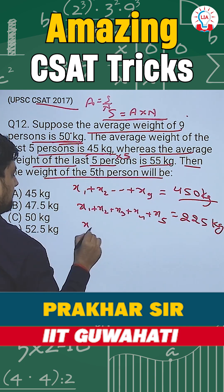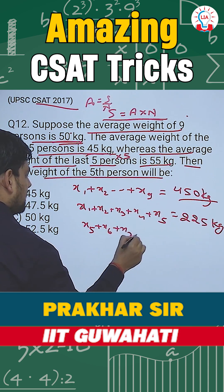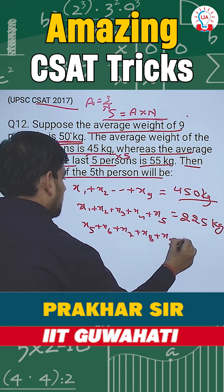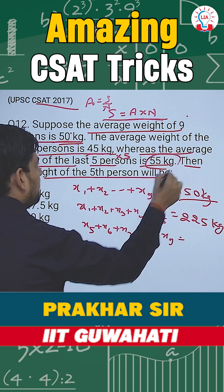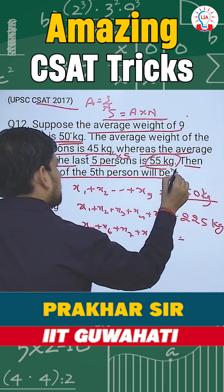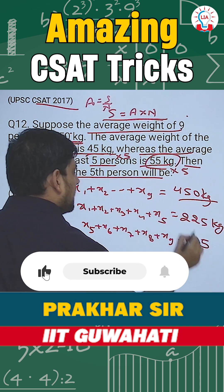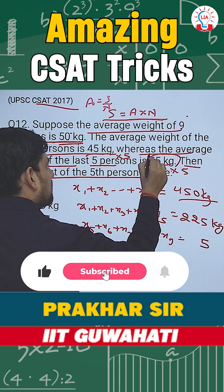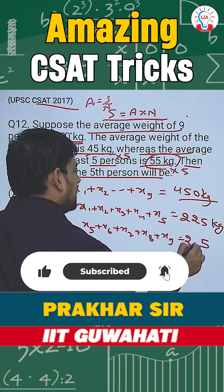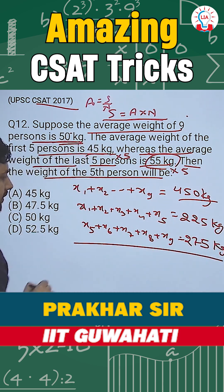For the last 5 persons — x5 plus x6 plus x7 plus x8 plus x9 — the average is 55 kg for 5 people. So 55 into 5 comes out to be 275 kg.